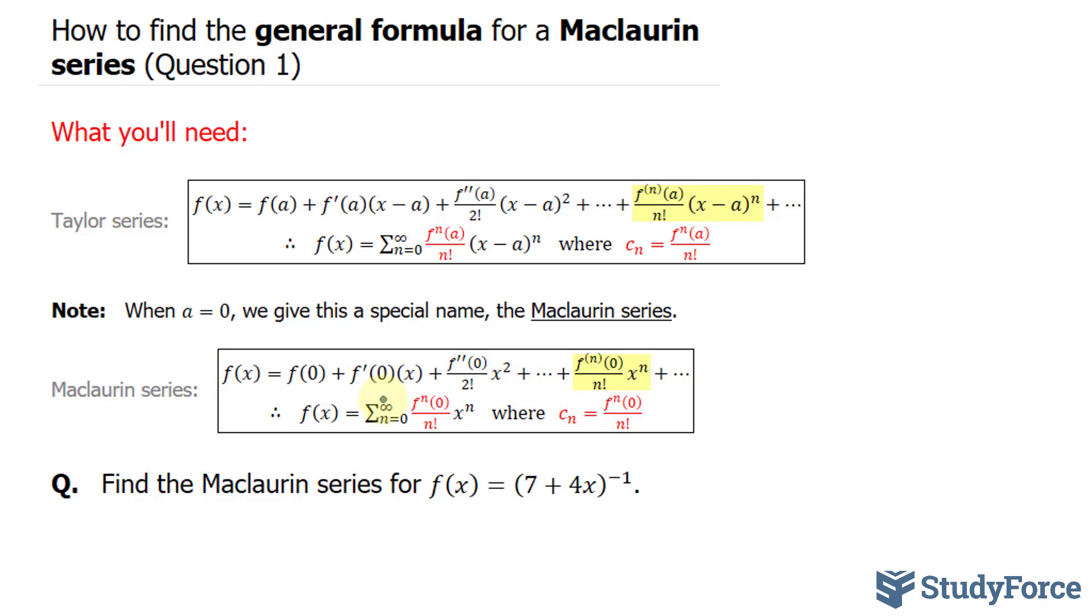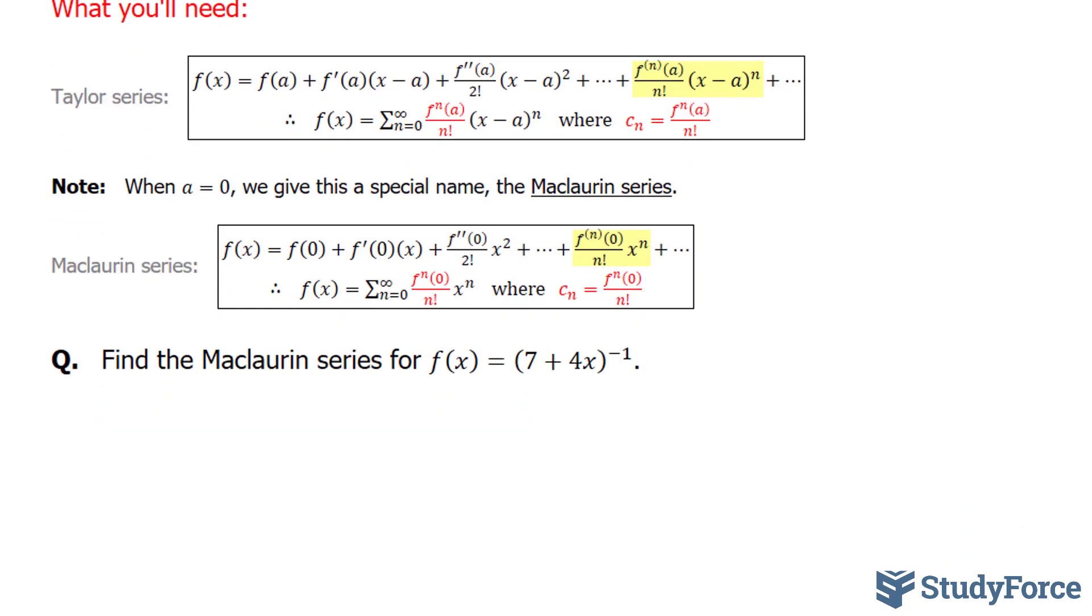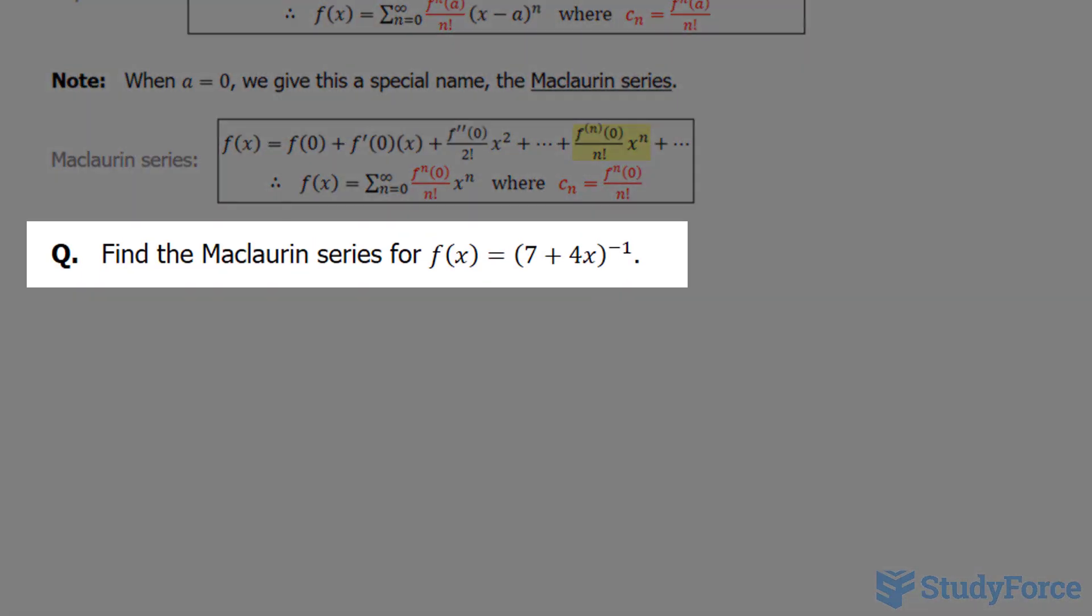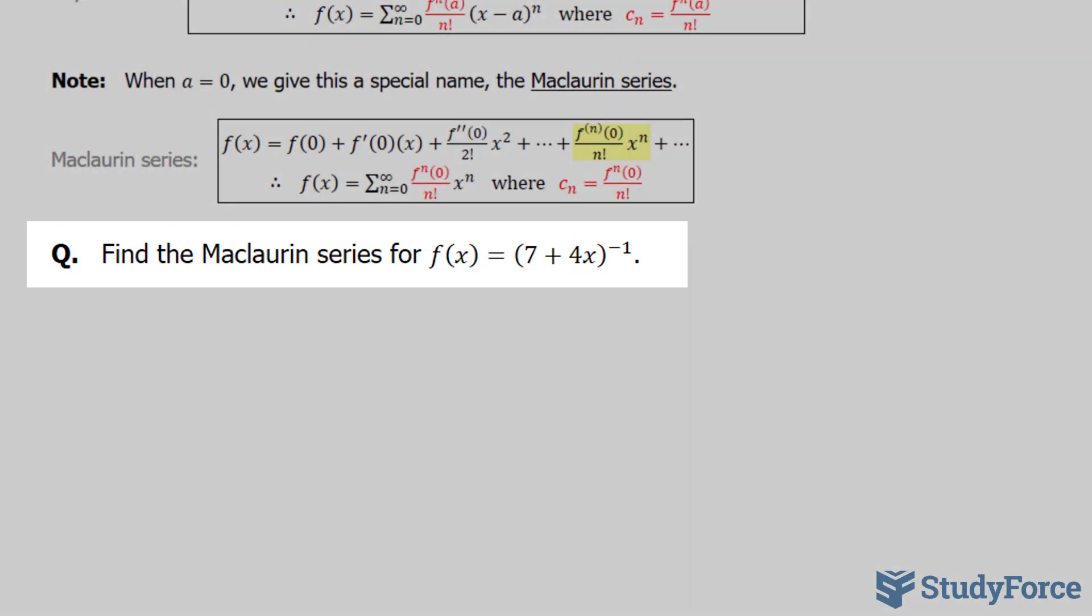We'll be using this part to help us solve the question, which reads, find the Maclaurin series for f(x) is equal to 7 plus 4x all raised to the power of negative 1.